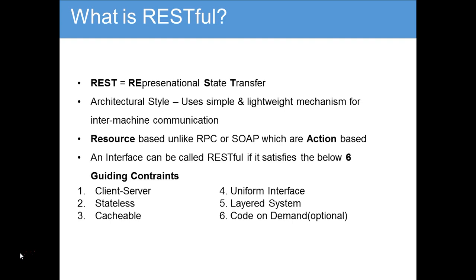The next constraint is uniform interface — the interface has to be uniform. It applies the software engineering principle of generality. If two developers are working on two different interfaces but both use RESTful architecture, they should both be able to understand the high-level design. This simplifies the interface and makes the interaction visible. REST architecture defines four interface constraints: identification of resources, manipulation of resources through representations, self-descriptive messages, and hypermedia as the engine of application state.